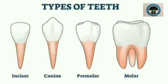Types of teeth. All our teeth are not of the same kind. All adult human beings have four types of teeth. According to the type of work they do, like biting, tearing, chewing the food.